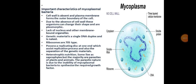In this slide you are learning about one more important and interesting example of monerans — that is mycoplasma. It is interesting because these are bacteria without cell wall, mesosomes, and plasma membrane, and are pleomorphic. Due to lack of cell wall they can change their shape.